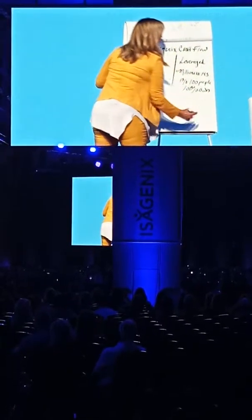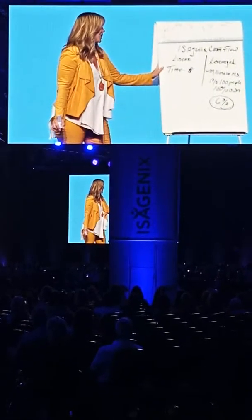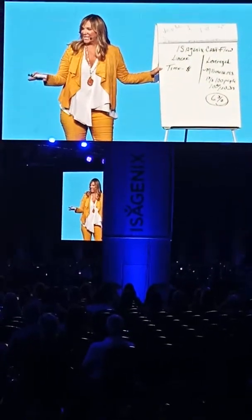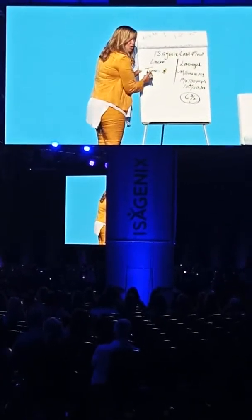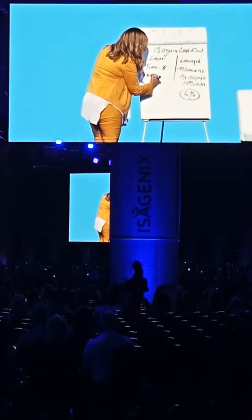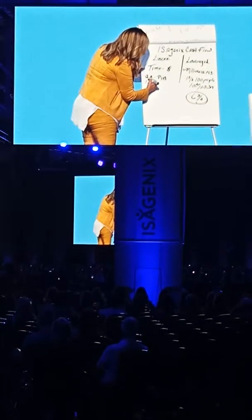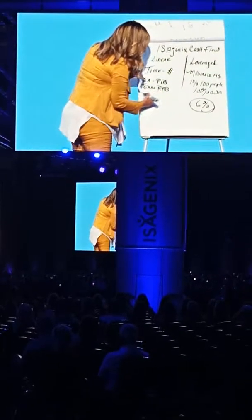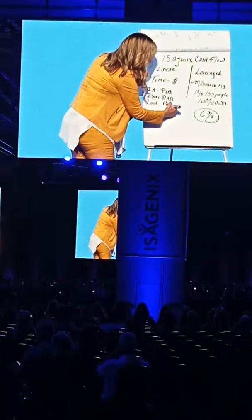I'd rather receive 1% of 100 people's efforts than 100% of my own. Would you agree? Our company pays 6% — how cool is that? On the left-hand side of the quadrant we have customer acquisition, which is our PIP; we have team building income, which is our RAB; and we have leadership income, which is our PIP.